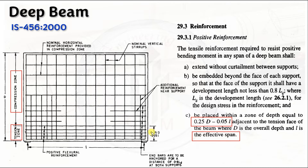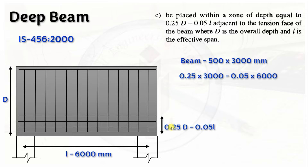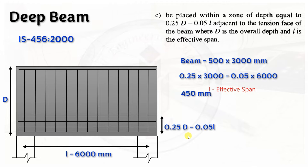Let us work through an example to calculate this distance and arrange the number of bars. We need to know the beam dimensions. Let us consider beam width as 500 mm and overall depth as 3000 mm. We calculate the zone distance as 0.25 times the overall depth minus 0.05 times the effective span. This gives a distance of 450 mm. So up to 450 mm from the tension face, we have to arrange the reinforcement bars in the tension zone.